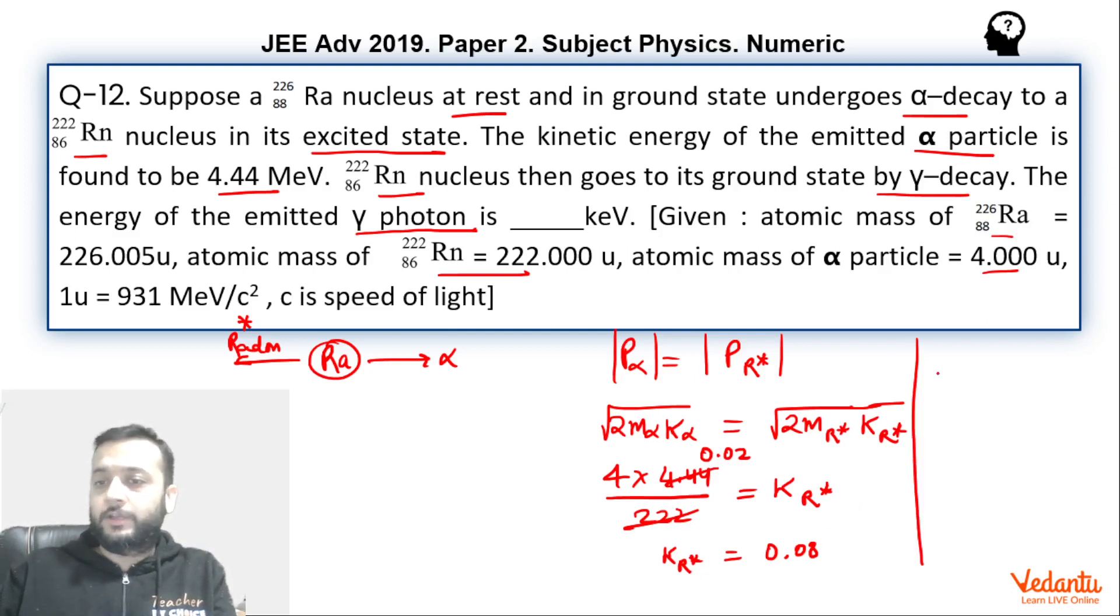And hence the Q value of the reaction, Q value of the reaction will be 0.08 plus 4.44, because whatever energy must have been emitted in the reaction would appear as the kinetic energy of the radon and the alpha particle.